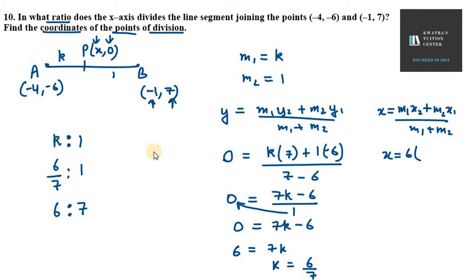Now for x-coordinate, x equals m1 x2 plus m2 x1 over m1 plus m2. x2 is minus 1, m2 is 7, x1 is minus 4 over m1 plus m2, which is 6 plus 7. So we have minus 6 minus 28 over 13. Minus 6 minus 28 is minus 34 over 13. So your x value is minus 34 over 13.